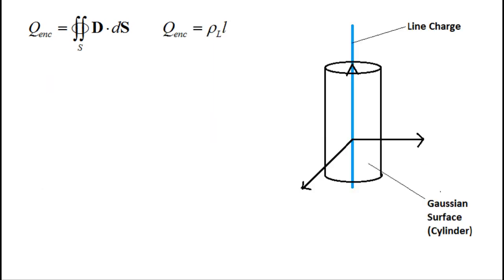The next example is a line charge. The total charge in this case is the linear charge density multiplied by the length of the line. So we once again want to make a surface that will allow us to pull the D out of the integral. The surface of choice here is the cylinder.